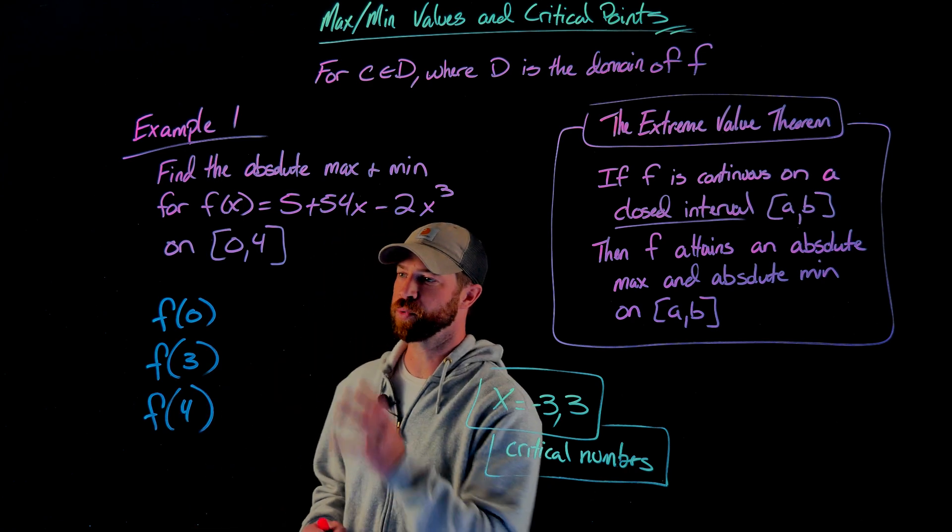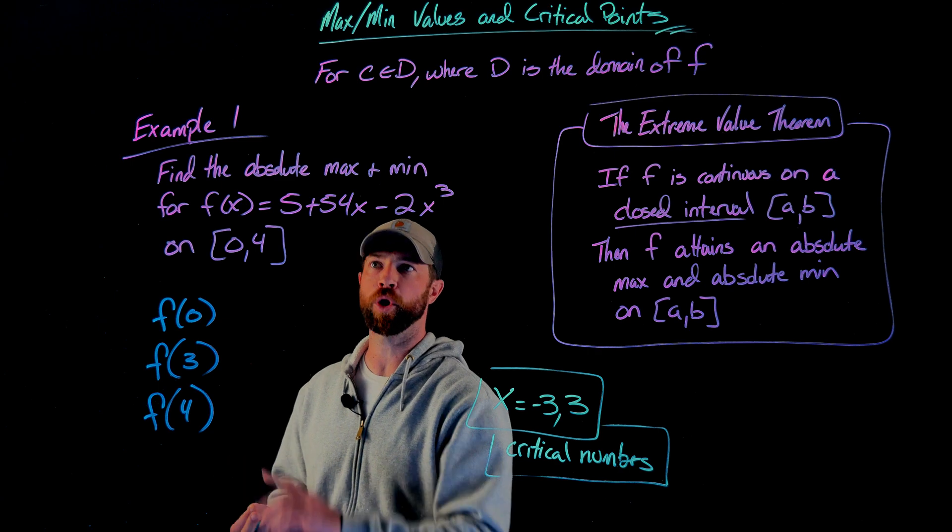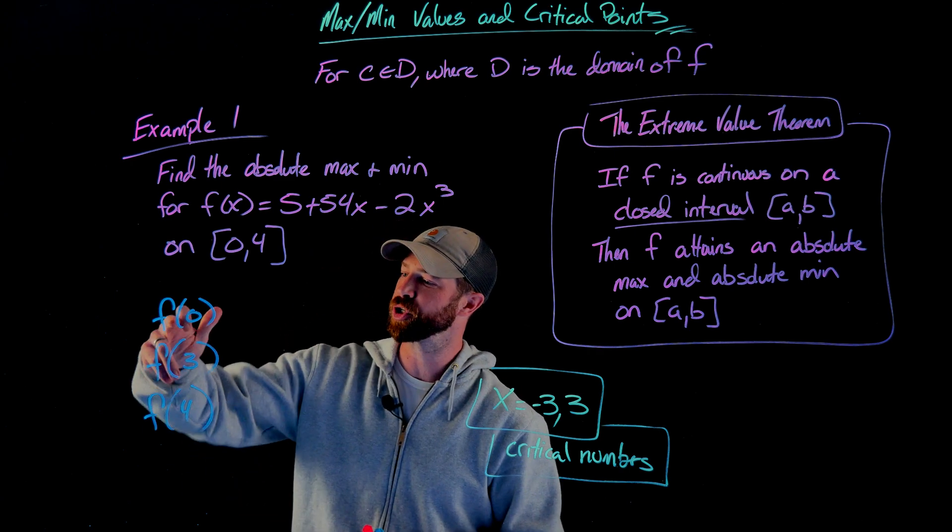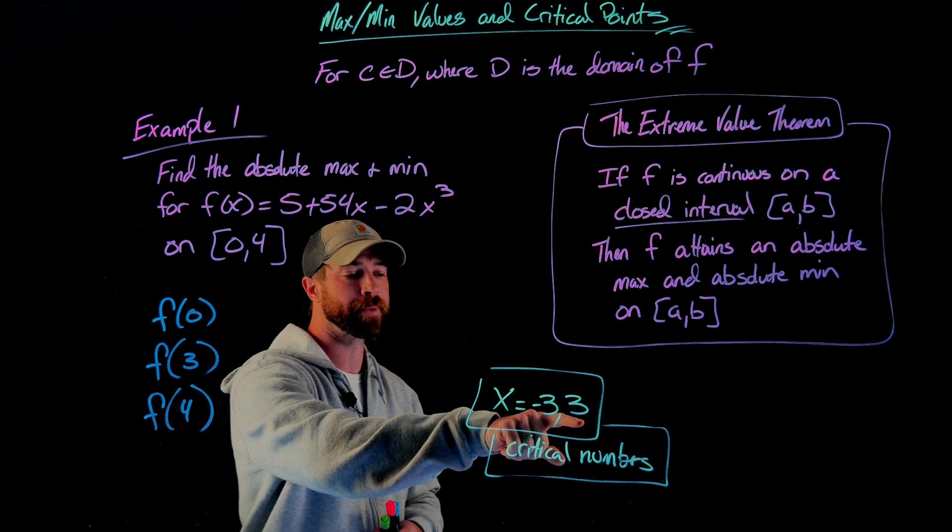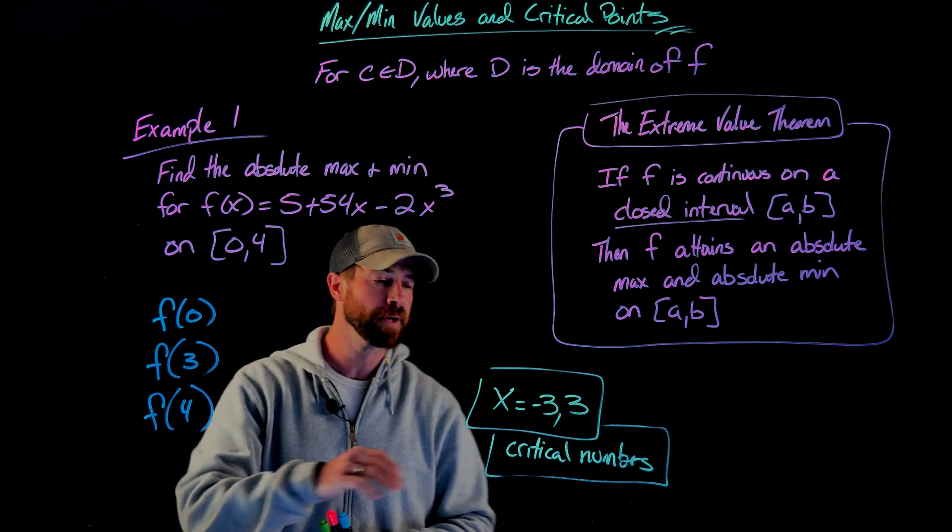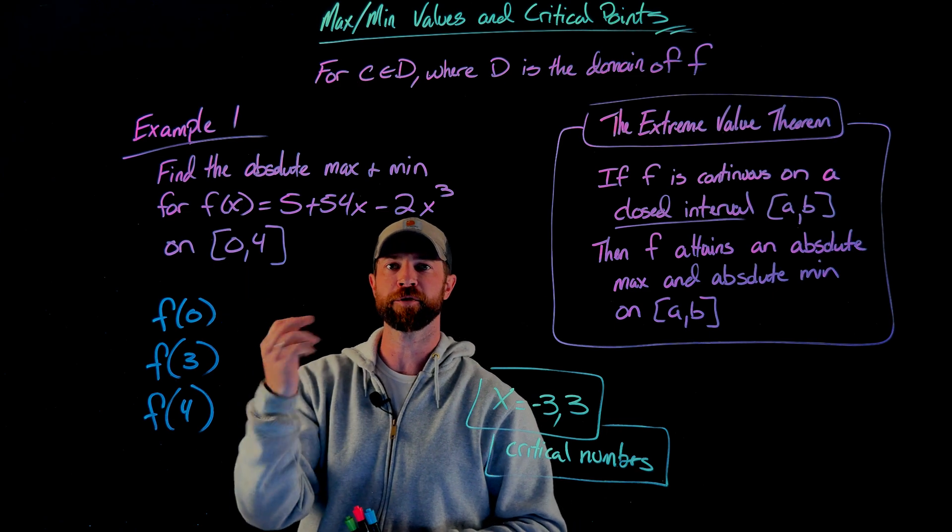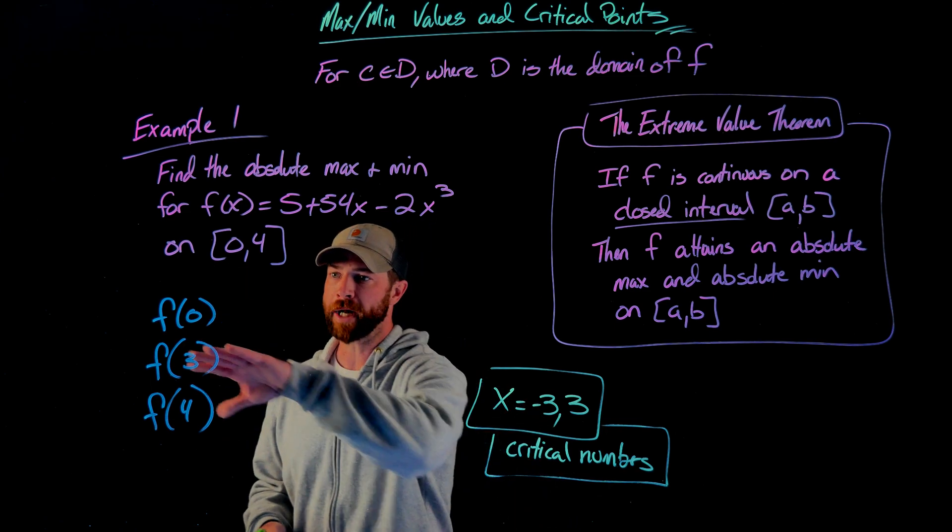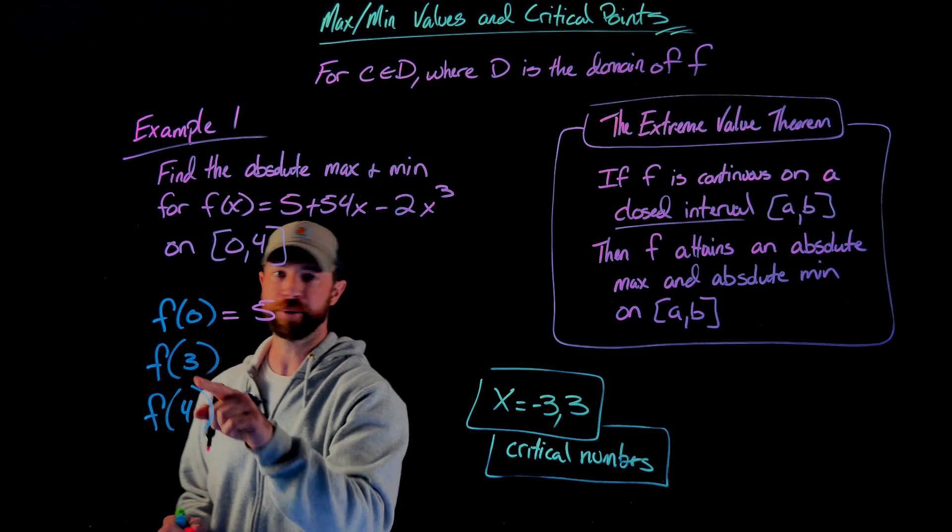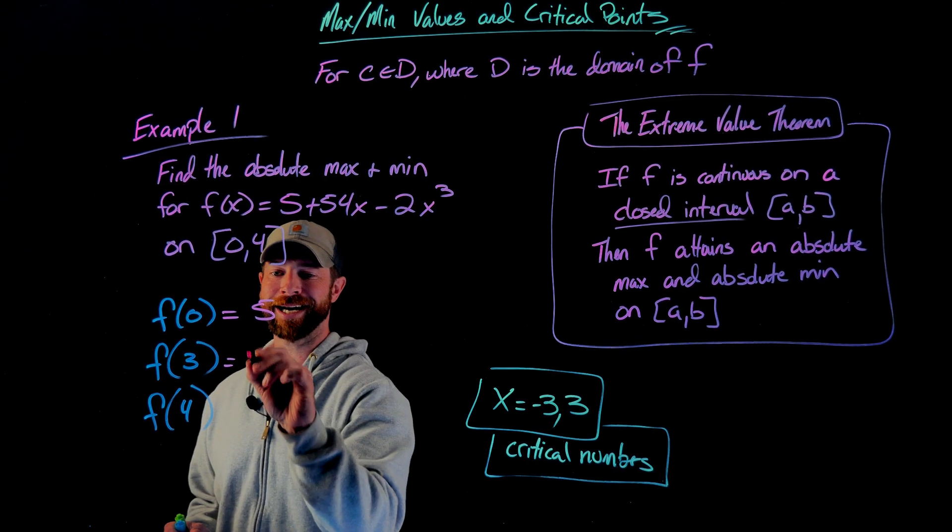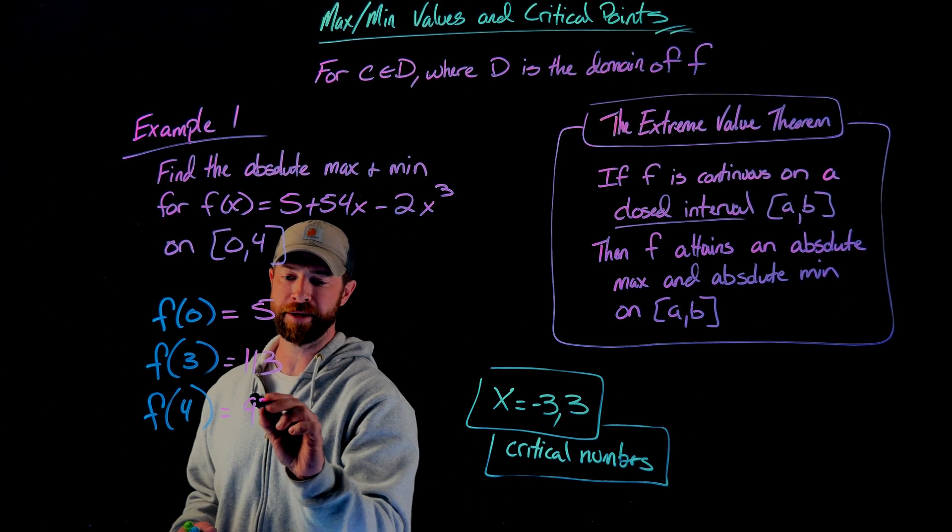I identified my critical numbers. Now I'm going to plug in 0, 3, and 4 into my original function. 0 and 4 are my endpoints, and 3 is the one critical number that lands on this interval. I don't care about -3 because it isn't on the interval from 0 to 4. When I plug in 0, I get 5. When I plug in 3, I got 113. And when I plug in 4, I got 93.